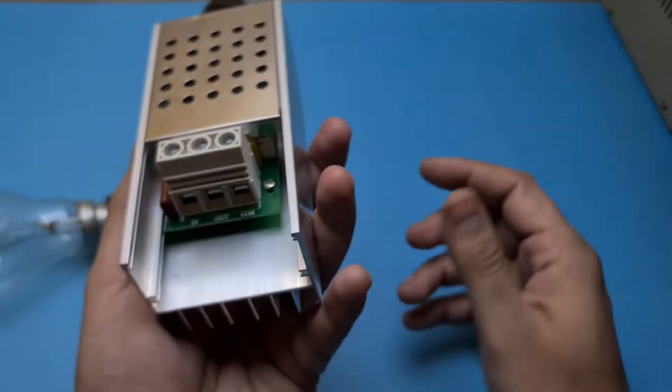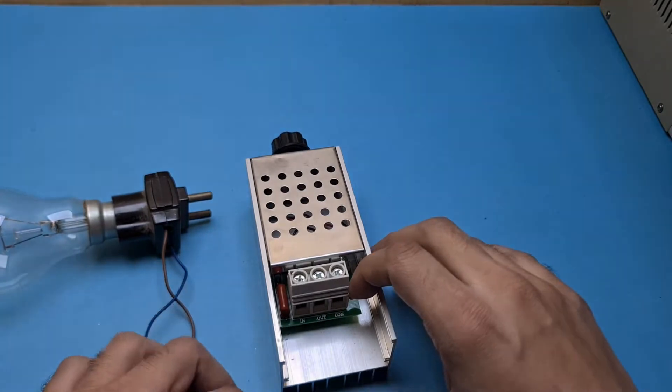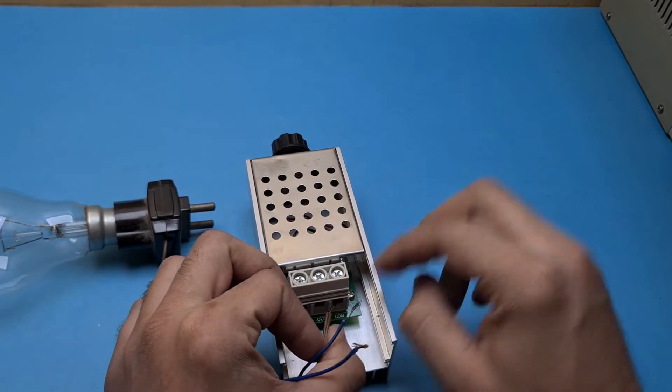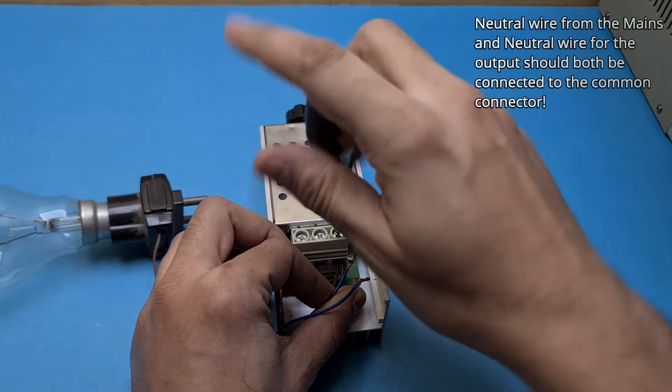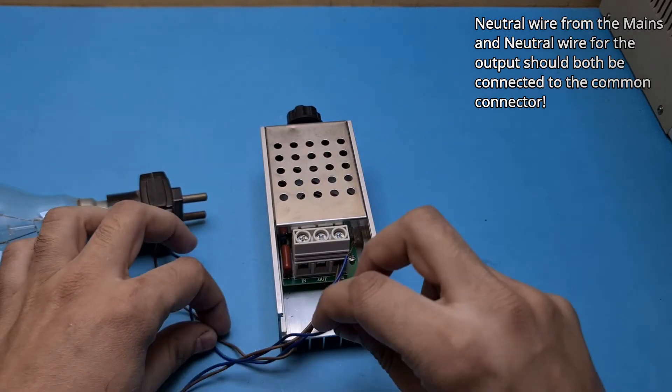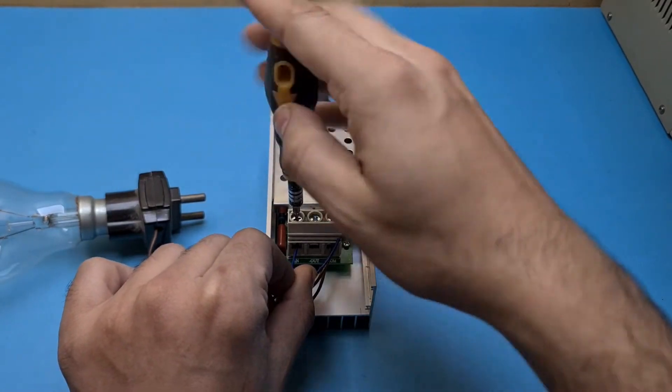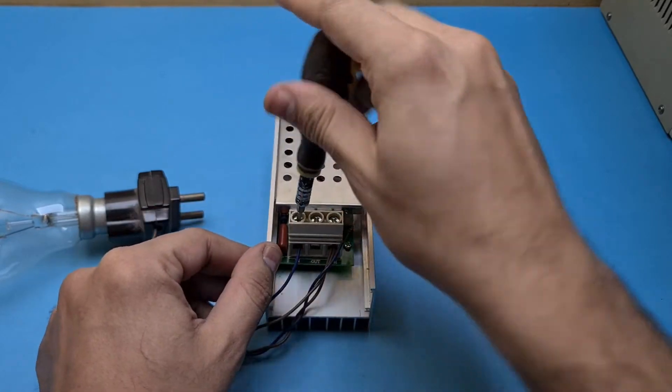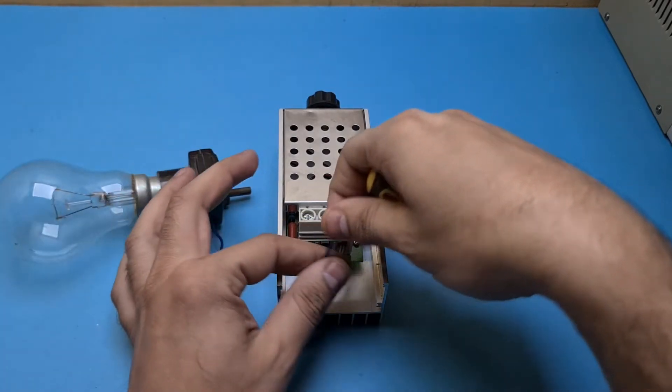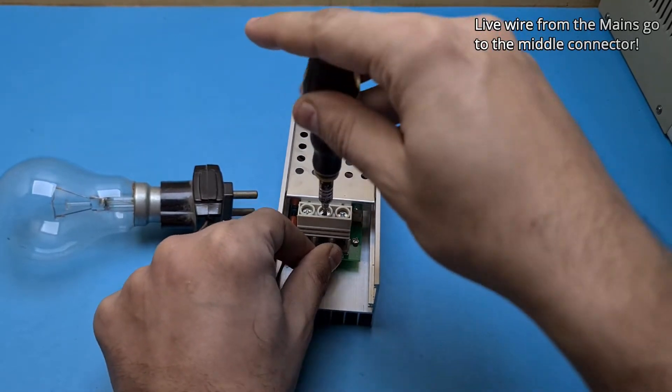The connections are very simple. This one is the common pin here, this one is the output and input here. Let me first connect the common wires here. Basically I have connected both neutral wires with this point. Now I will connect the load side first, which is the bulb here, and finally this is the live wire. Of course I have not connected to the mains yet. Let me insert this wire here and tighten the screw.